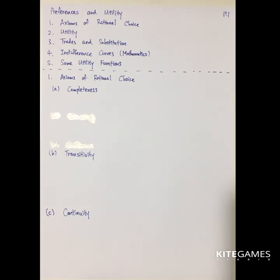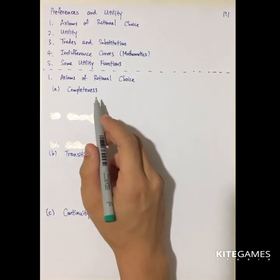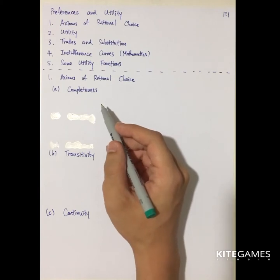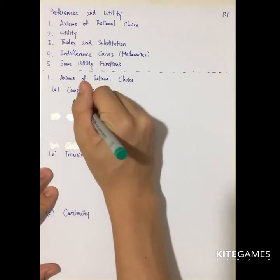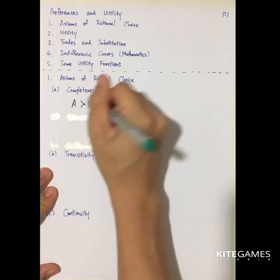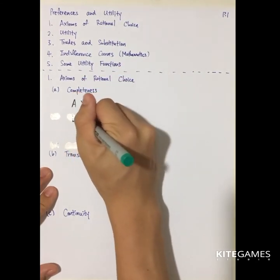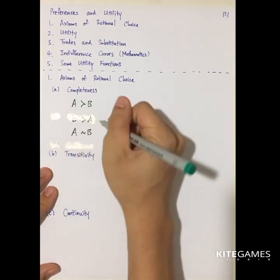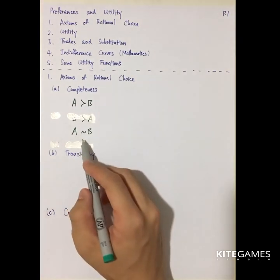The axiom of rational choice is about how people make decisions. To make rational decisions, you need certain assumptions. The first is completeness. Completeness means that given any two choices, you can always distinguish whether A is better than B, B is better than A, or A is equally as good as B.